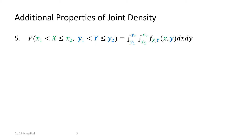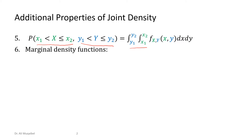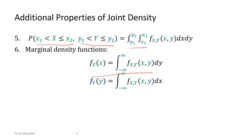The fifth property: if you want to find the probability for a given range, we now have two ranges because we have two random variables, so you integrate over all possible ranges. That's the basic definition of the density function — when integrated, it gives you the probability. For the marginal density function, all you need to do is marginalize one random variable, integrating over all its possible values. We can also marginalize with respect to Y and get the marginal PDF.